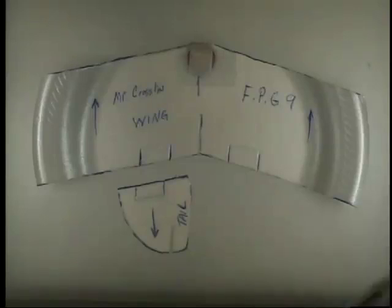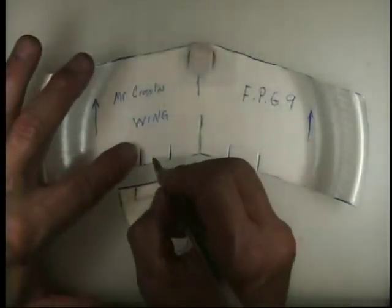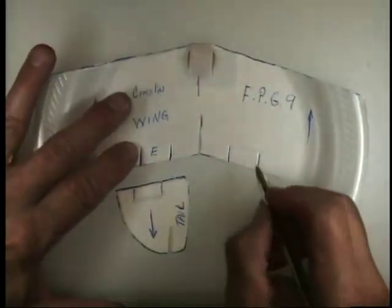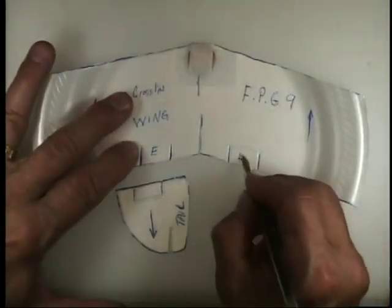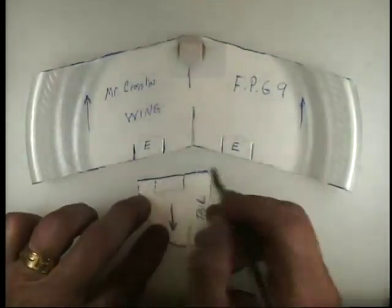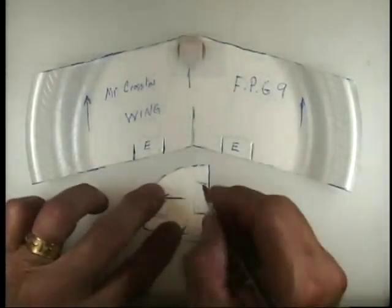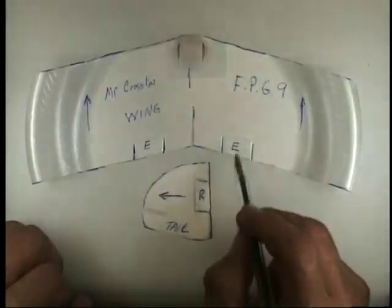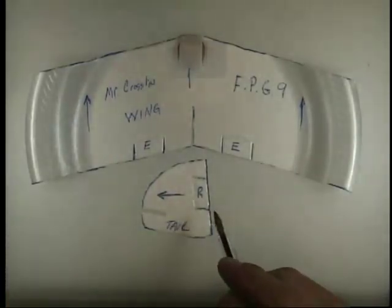Once these are scored, there's some special letters I want you to write on them. These are elevons, so I want you to write E for elevon. There are two elevons, and we'll just write E for elevon. This is your rudder. So I'm going to turn it like this and write R for rudder - E, E, R. Go ahead and put those on your plane.